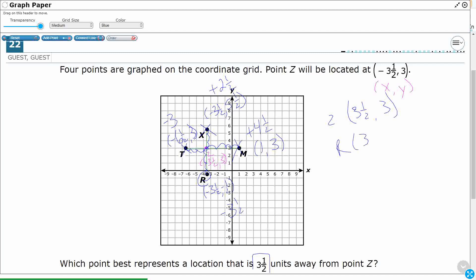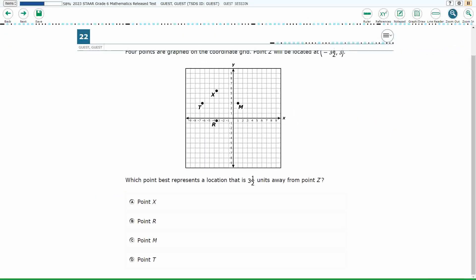And what I did here is I went to R. I kept my 3.5, but if I took 3.5 away, 3 minus 3.5 is going to get me to my y value of negative 1.5. So my answer here is going to be R, B.